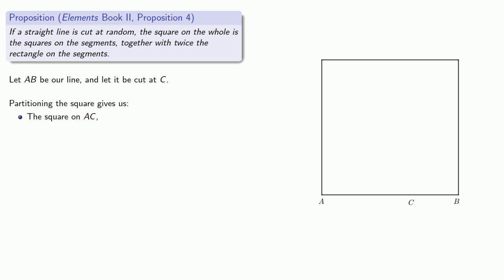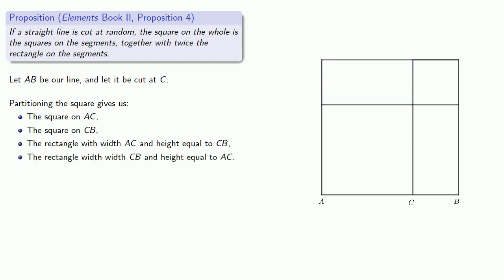And if we partition this square, we get a couple of other figures. First, we have the square on the part AC, the square on the part CB, and let's slide that square up to get it out of the way. You should take a moment to convince yourself that this is what it would actually look like. The rectangle with width AC and height equal to CB, and the rectangle with width CB and height equal to AC.